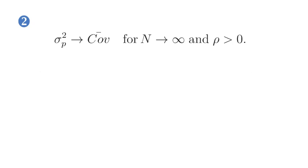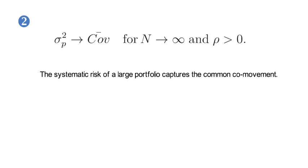This says that systematic risk of a large portfolio captures the common co-movement among all the constituents of that portfolio.